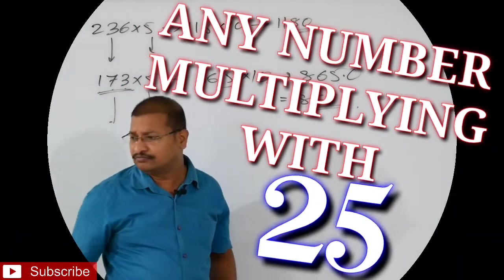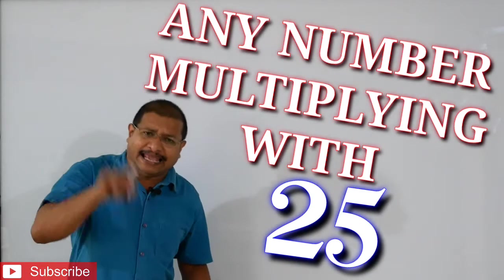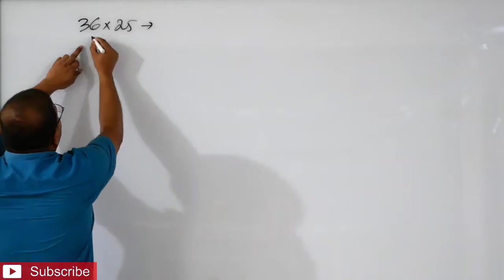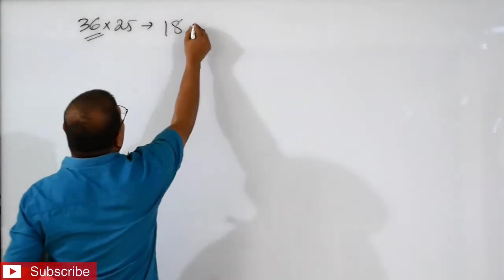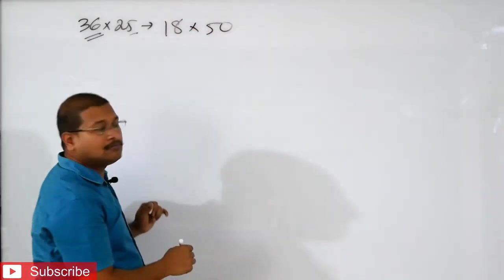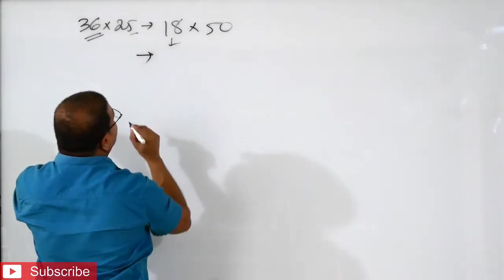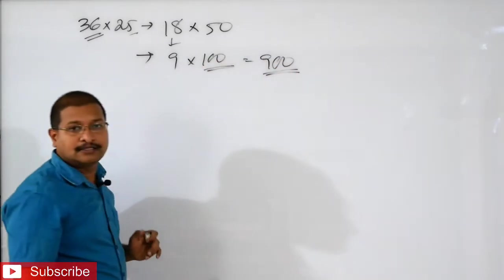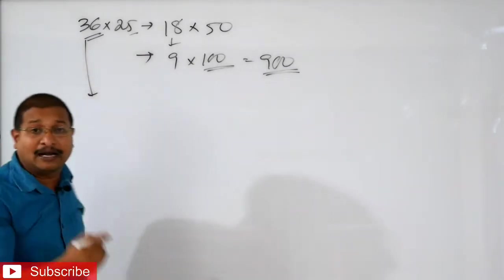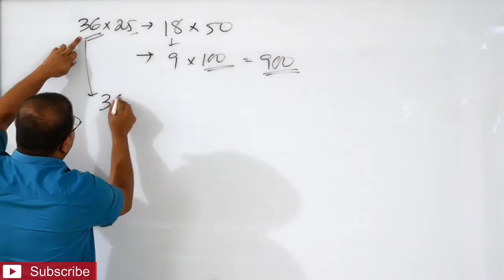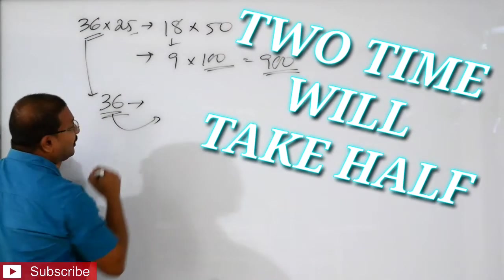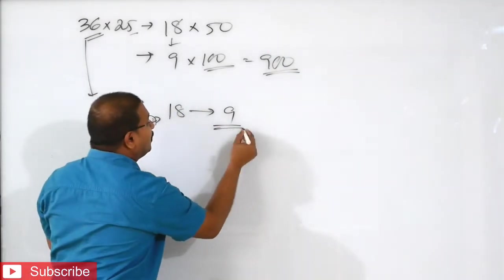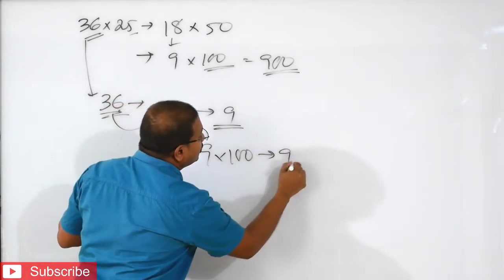Let us see now: any number if you multiply with 25. If you multiply any number with 25, see 36 into 25. What you will do? Half of 36, that is 18. And double of 25, that is 50. One more time: half of 18, that is 9. Double of 50, that is 100. That means the answer is 900. Any number if you want to multiply with 25, you take the number — 36 — and 2 times you take half: 36 becomes 18, then 9. After that, that number you just multiply with 100 and you get the answer.